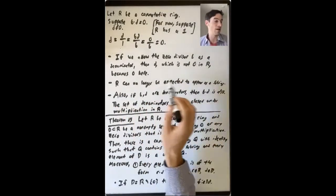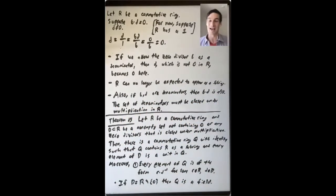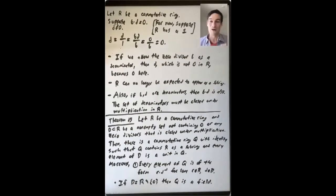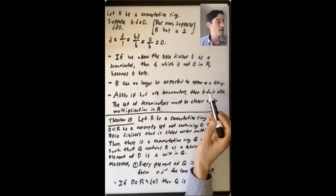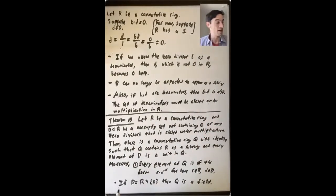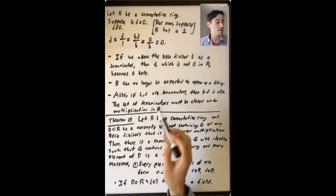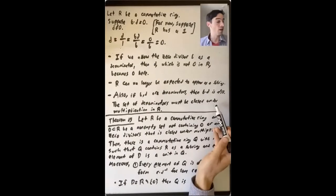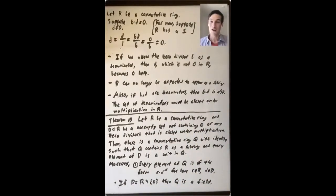Maybe it's not so important to us that R appear as a subring — I'll talk more about that later at the end of this lecture. Also, if b and d are both denominators, then thinking about how you multiply fractions, the denominator of the product is the product of the denominators. So b times d should also be a denominator — the set of denominators has to be closed under multiplication in R.